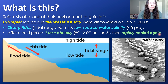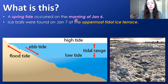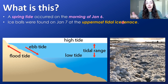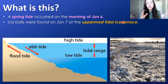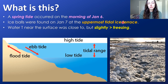The temperature then rapidly cooled again. A spring tide occurred the morning of January 6, and the ice balls were found on January 7 on the uppermost tidal ice terrace. Every time the tide rose to a certain level, it deposited ice, and the uppermost tidal ice terrace would be where the highest tide reached. The spring tide, being a really high tide, would have moved the ice balls up to the uppermost terrace. The water temperature was measured to be very close to but slightly above freezing.